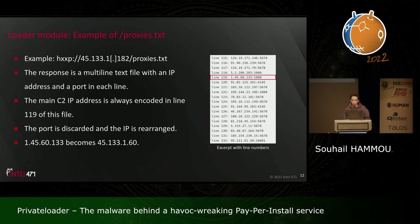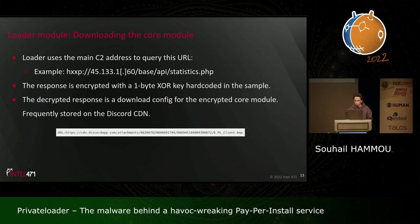Looking at a single endpoint called proxies.txt — which could easily be mistaken for a proxy list — most lines are decoys. The interesting line is line 119, where the actual C2 IP address is encoded. The IP address is taken, the port is discarded, and the octets are rearranged: for example, 145.60.133 becomes 45.133.160. This main C2 address is then used to retrieve a configuration to download the encrypted core module.